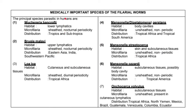Here are the medically important species of filarial worms. We have Wuchereria, found in the lower lymphatics, and Brugia malayi. Loa loa's habitat will be discussed. We also have Mansonella perstans, whose habitat is the body cavities. The microfilariae of Mansonella perstans are unsheathed and non-periodic, meaning they can be found throughout the day. Its distribution is in tropical Africa and tropical South America, so there is not much Mansonella perstans here in the Philippines.